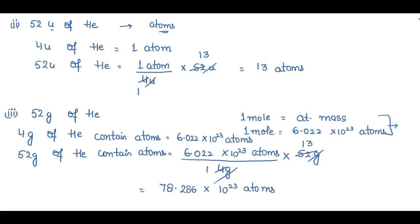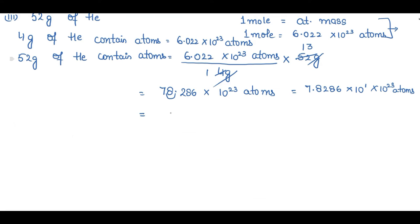Converting to scientific notation: 1 digit displacement from right to left gives a positive power, so 7.8286 × 10¹ × 10²³ atoms. Adding powers: 1 + 23 = 24. Rounding to 2 decimal places — the third digit is more than 5 — so 7.83. Final answer: 52 grams of helium contains 7.83 × 10²⁴ atoms.